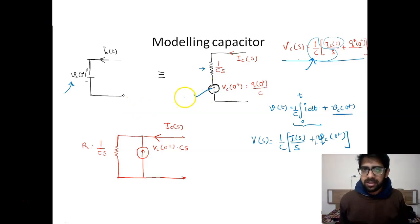Also this can be converted into current source formation. So the resistance remains same, it is 1 upon Cs, and current source value will be Vc of 0 plus divided by this resistance, that means multiplying by Cs. So this is the value of my current source, and input current is i of s.